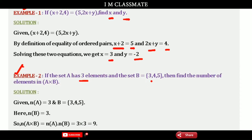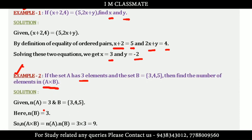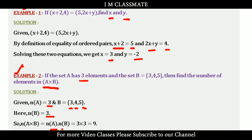Set A has 3 elements, and set B has elements 3, 4, 5, so the cardinality of B is 3. We know that cardinality of A cross B equals cardinality of A multiplied by cardinality of B. That is 3 × 3 = 9.